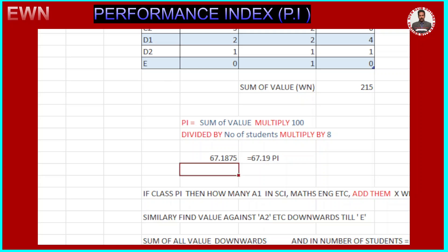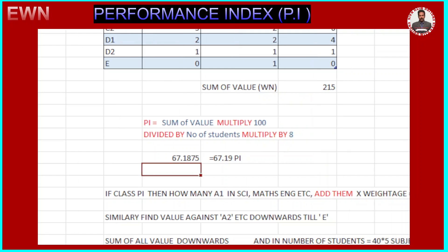So for class PI with five subjects, the number of students will be 200 (40 students × 5 subjects), and the sum of values will change accordingly.